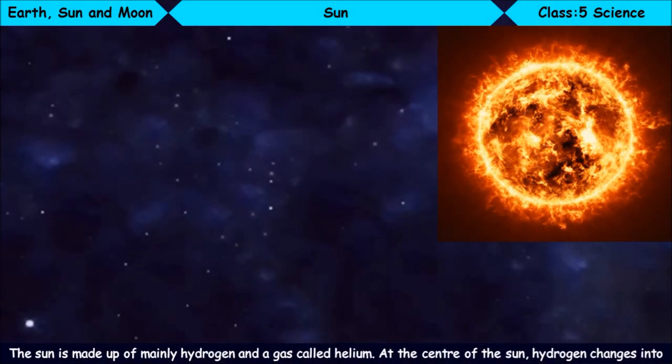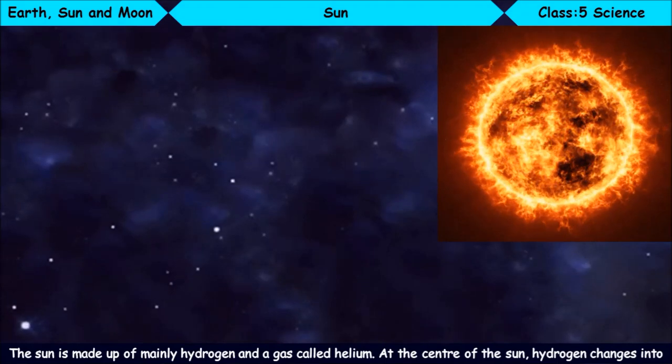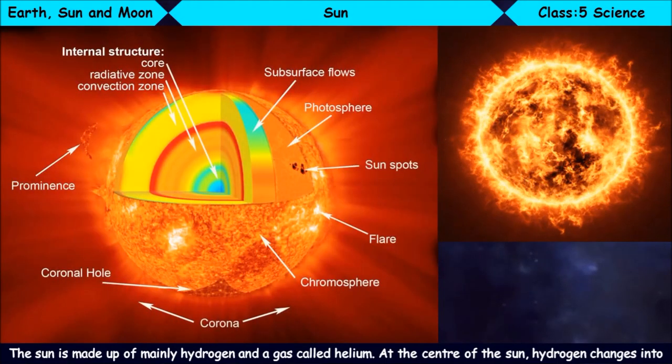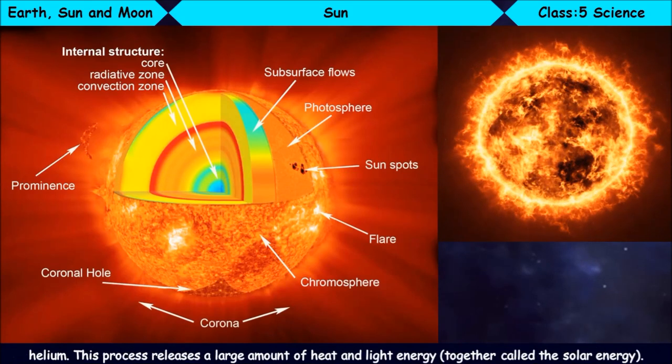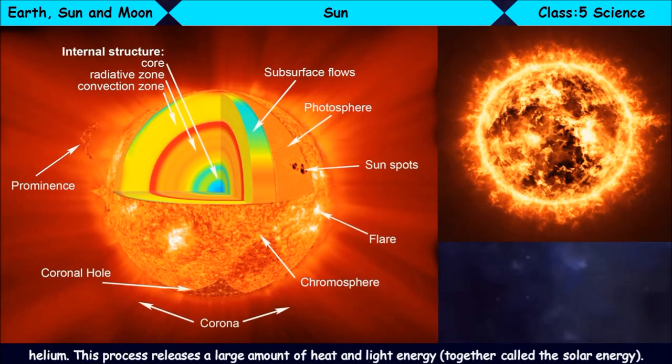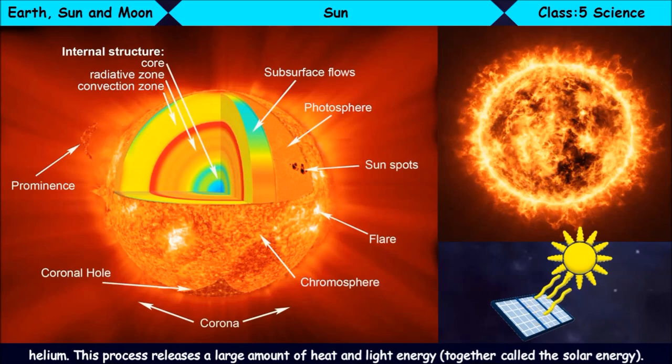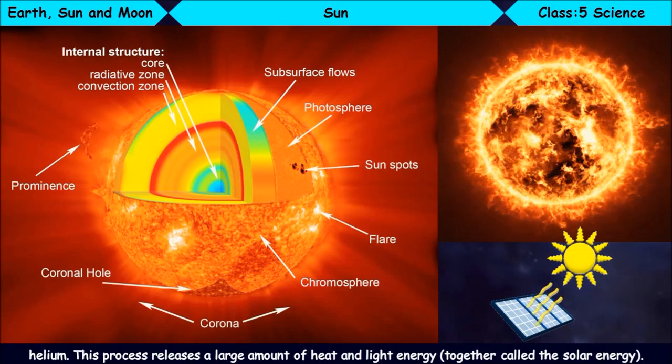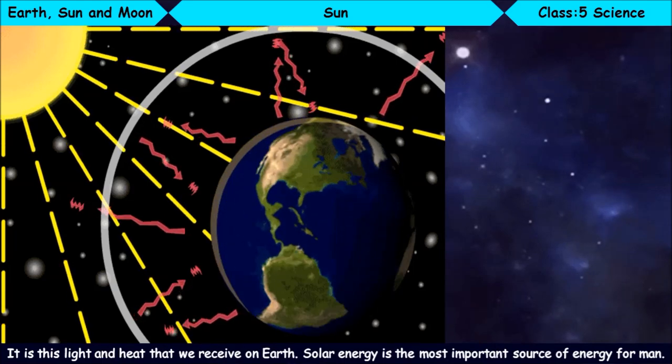The Sun is made up of mainly hydrogen and a gas called helium. At the center of the Sun, hydrogen changes into helium. This process releases a large amount of heat and light energy, together called solar energy.